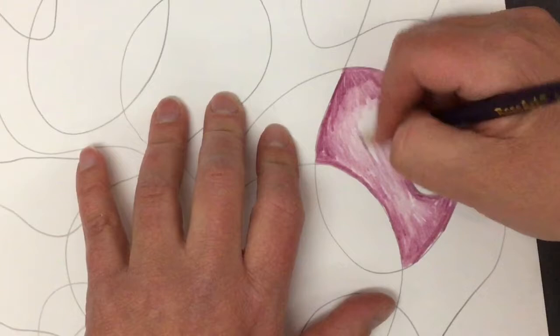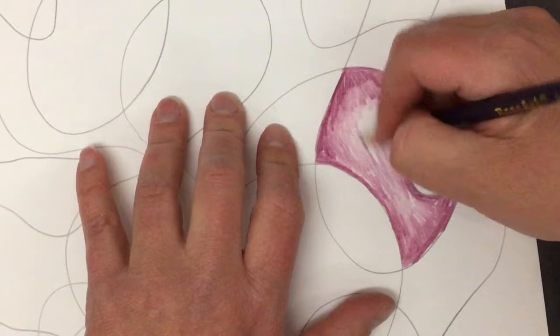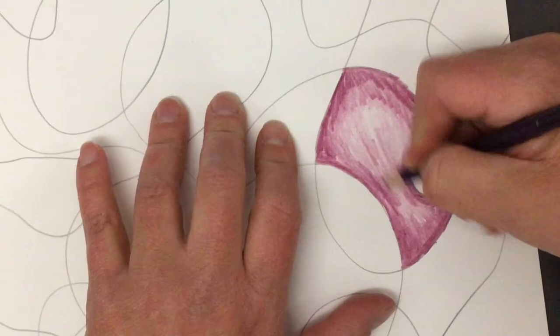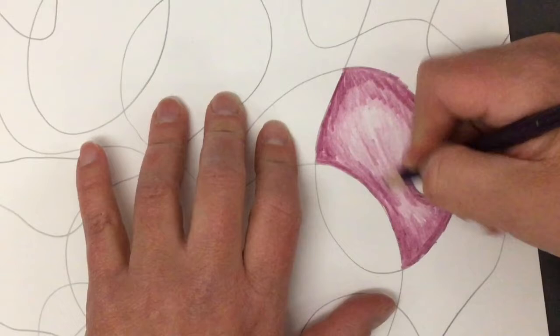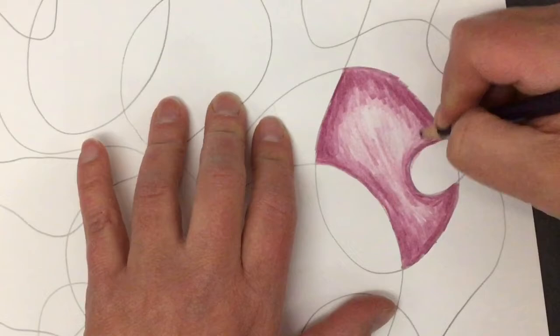And the effect we're going for is to make it look kind of smooth and seamless. So I can kind of see some of my lines still. So now I'm going back in and kind of cleaning it up, maybe coloring a little bit different direction to fill in some spaces and make it look like a smooth ombre effect.